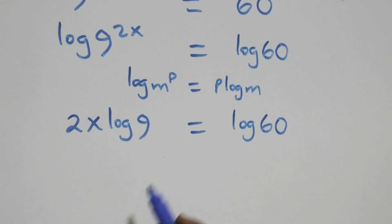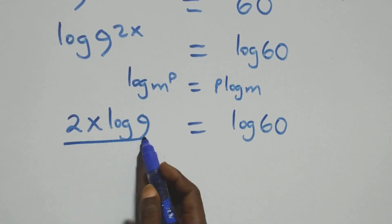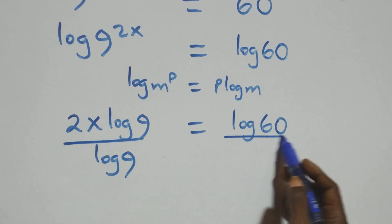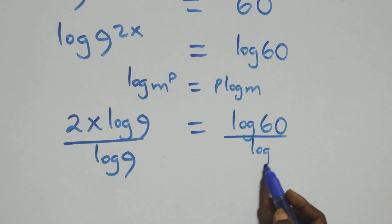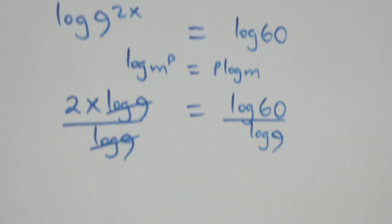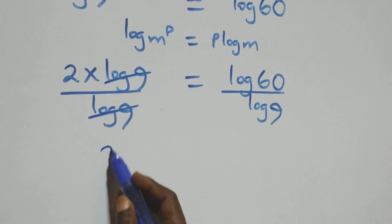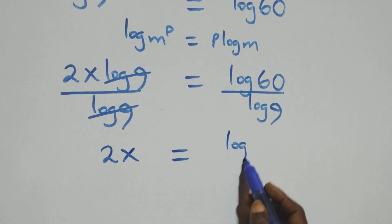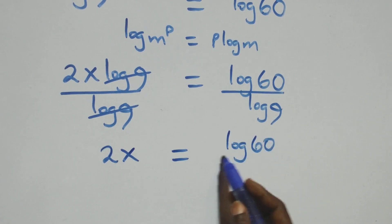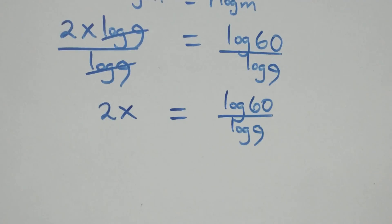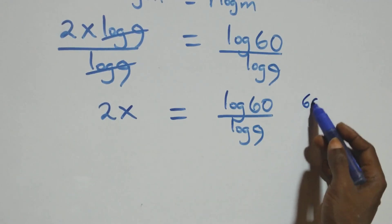In the next step, we divide both sides by log 9. Log 9 cancels on the left side and we have 2x equals to log 60 over log 9.